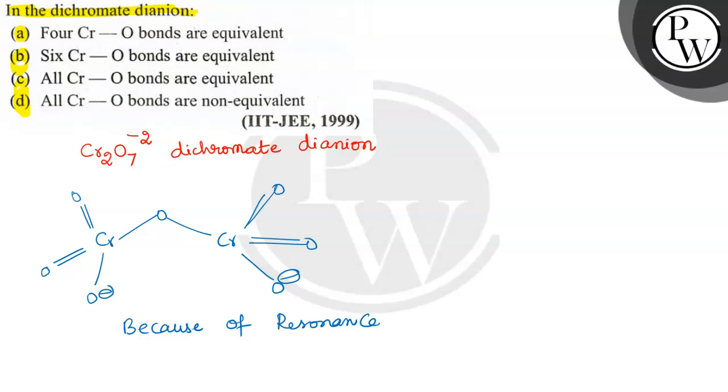So we can write the structure of this Cr: one, two, three, four, five, and six.